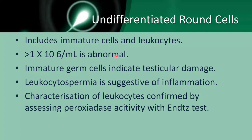Always include both immature cells and leukocytes — they must be counted and mentioned even if it is difficult. If more than 1 × 10⁶ per mL, you must investigate the cause, treat, and follow up. Immature cells indicate testicular damage, while leukocytospermia indicates possible inflammation. Peroxidase activity assessment or other special stains can help confirm the cell type.